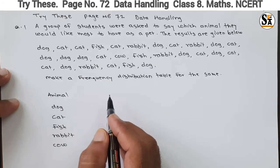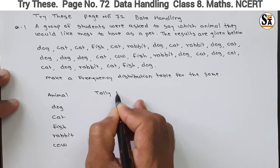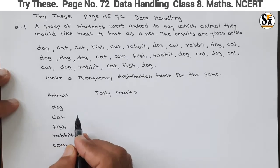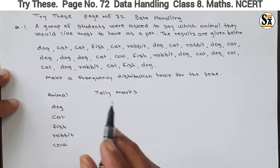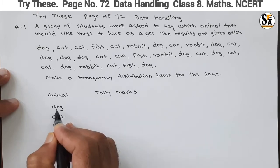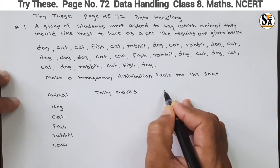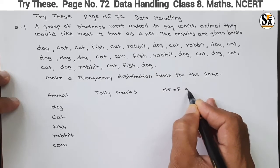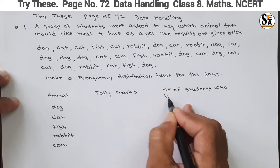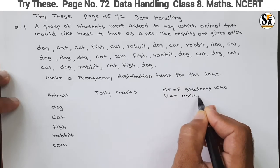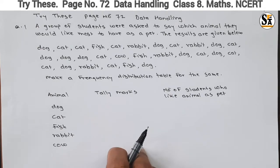So we will make a tally mark in the next column. We will make tally marks for their observations. How many students like dog as a pet? The first student likes dog, so we will mark one tally mark in front of dog. In the last column we will write the number of students — that is, the total of the tally marks — the number of students who like each animal as a pet.